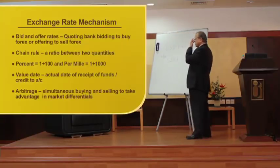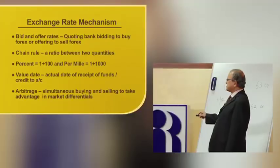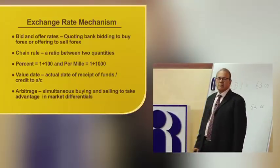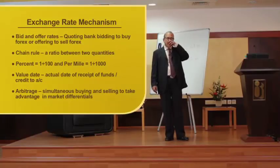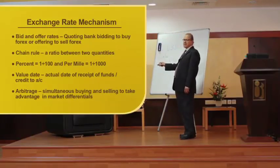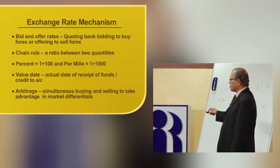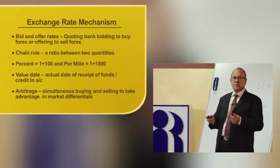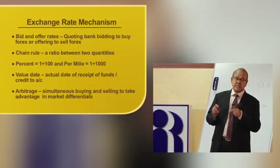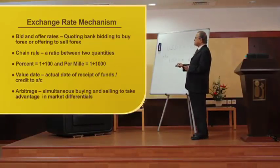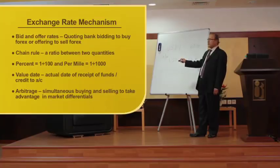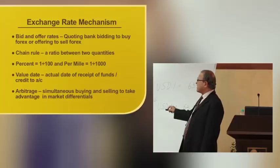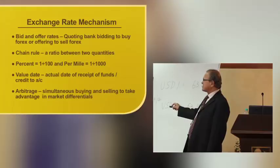Bid and offer rates mean buying and selling rates — nothing complicated. Always remember, rates are with reference to the banks, not the customers. If a bank quotes a bid rate, that is the rate at which the bank is willing to buy. If an offer rate is quoted, that is the rate at which the bank is willing to sell. Chain rule is related to cross rates. Percent per mil: 0.30 divided by 100 is a percentage, while a mil is expressed in terms of thousands.